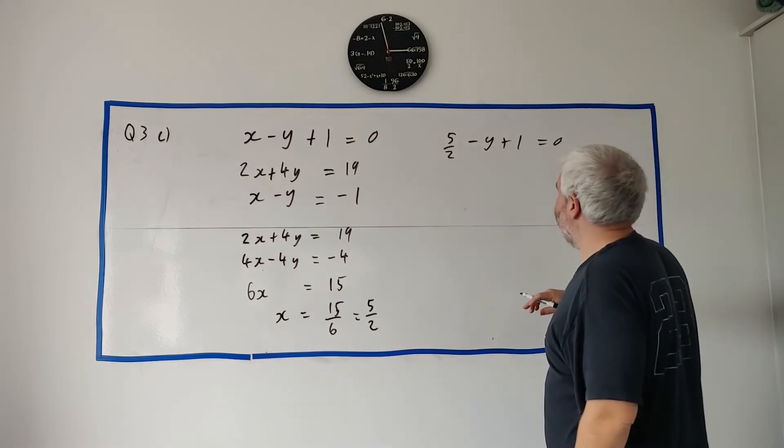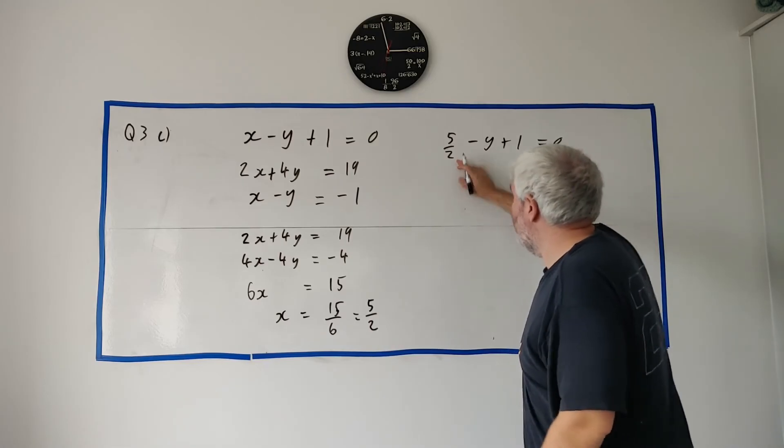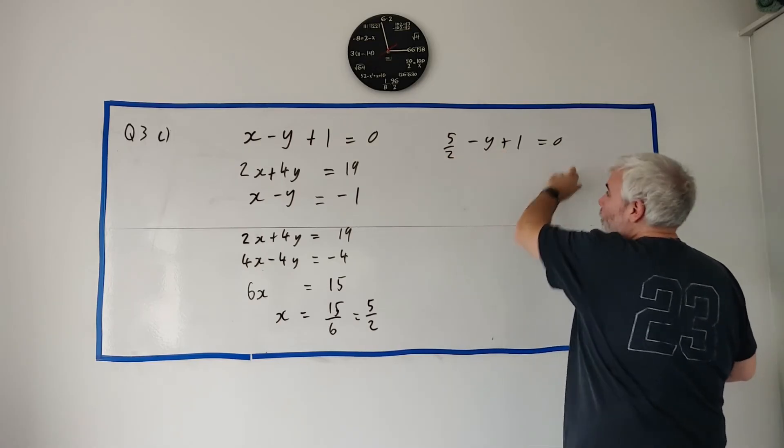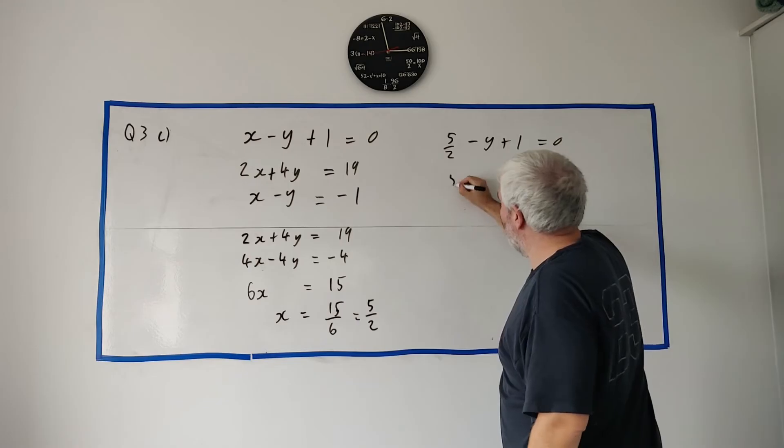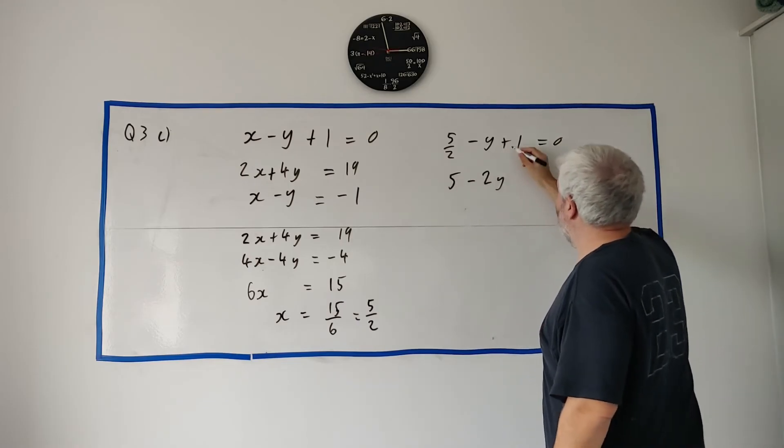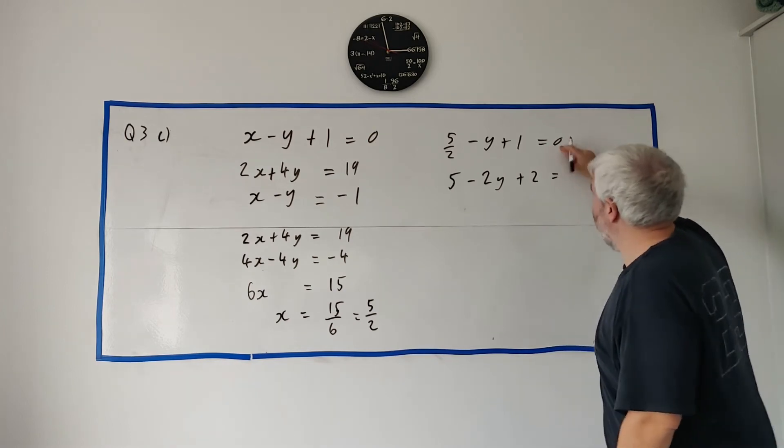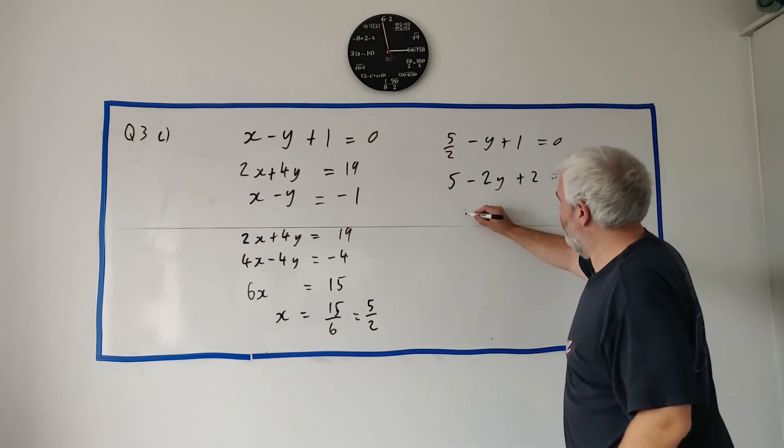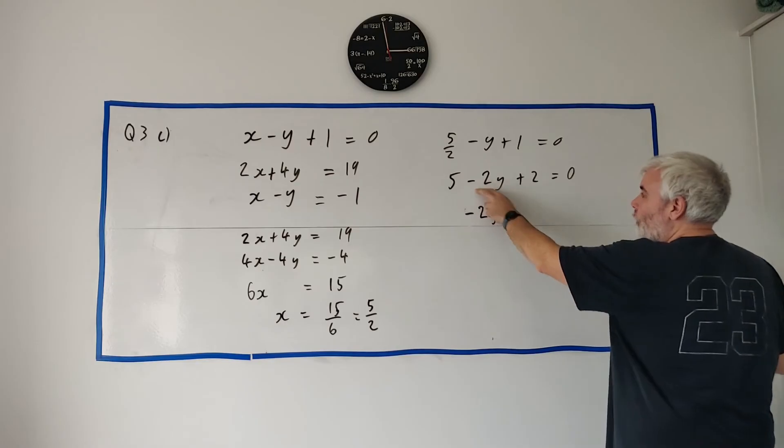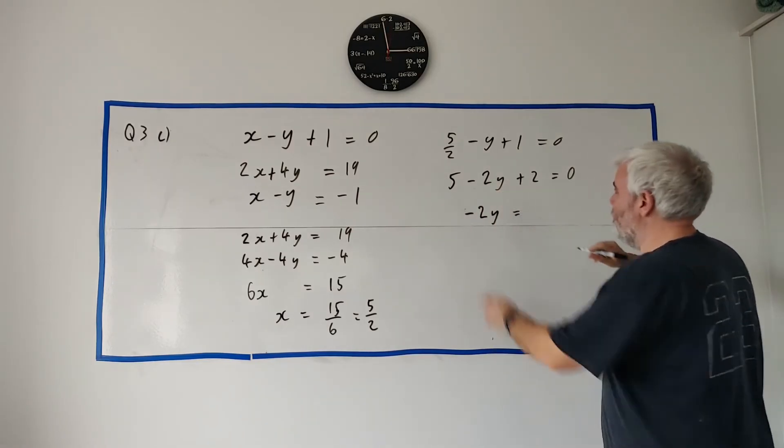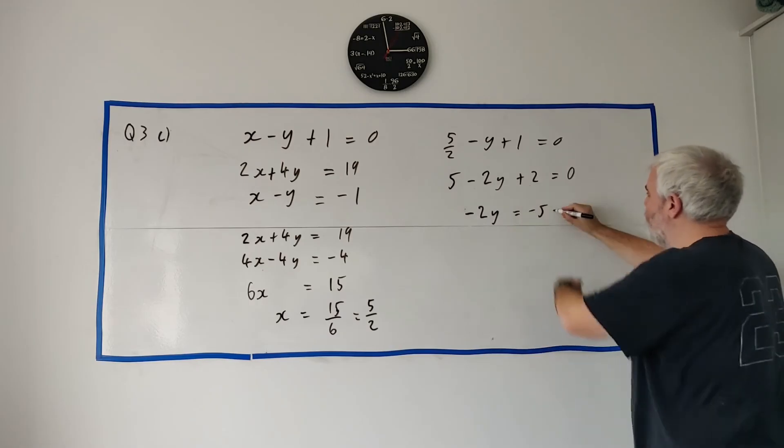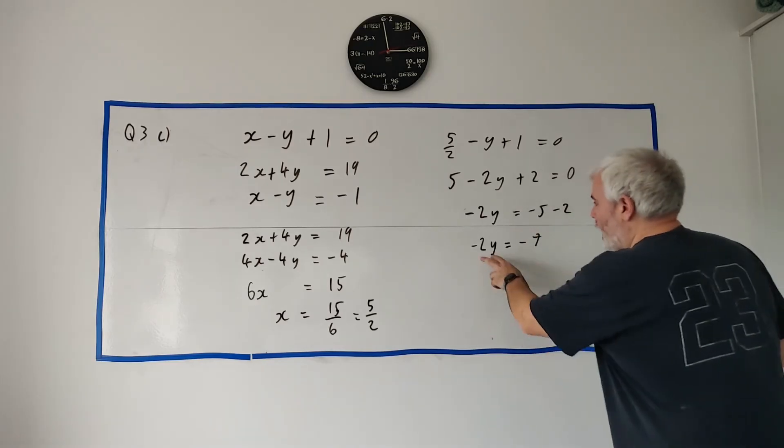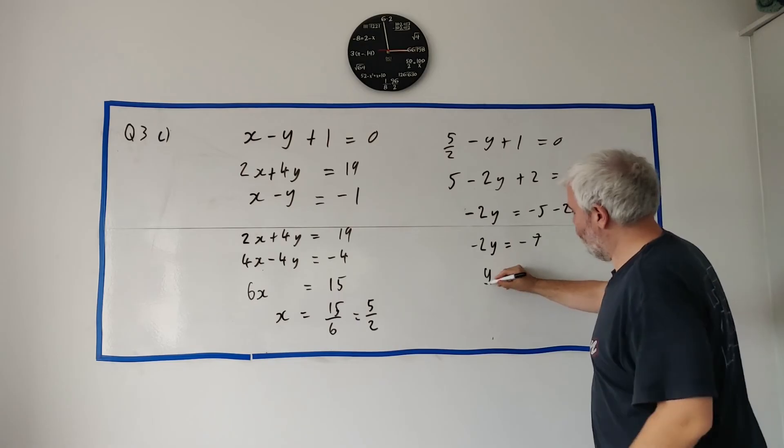So now we just have to move everything around and solve for y. First of all, fractions. People hate fractions. So we're going to get rid of that. Let's multiply it by 2 and that'll get rid of it. If we do that, we have to do it to everyone. So 5 over 2 multiplied by 2 is 5, minus 2y plus 2 equals 0. Let's clean all this up. Get all the numbers to the right. All the y's on the left. Minus 2y, don't forget the minus is with the y. Equals minus 5 minus 2. Let's clean this up. Minus 2y equals minus 7. Let's divide both sides by minus 2.